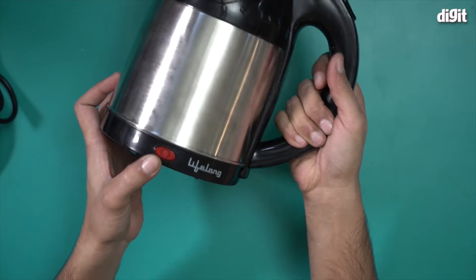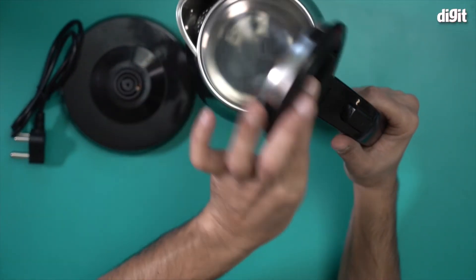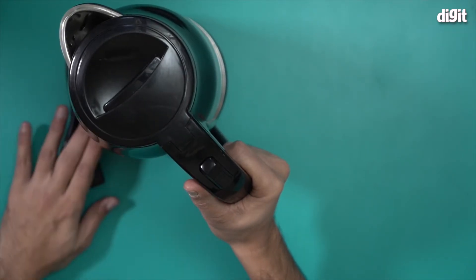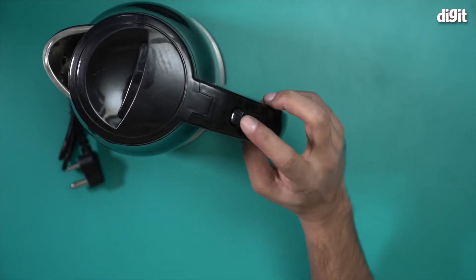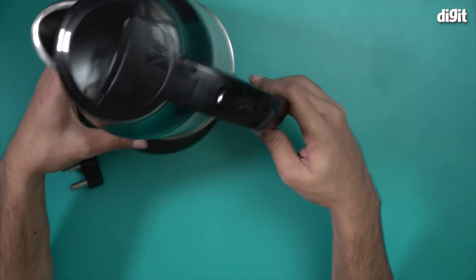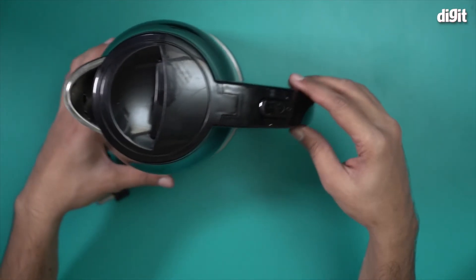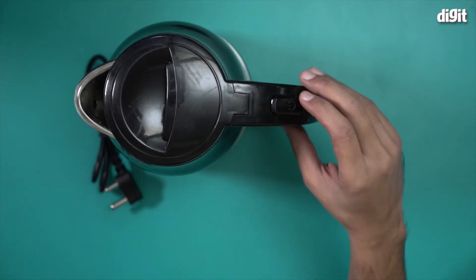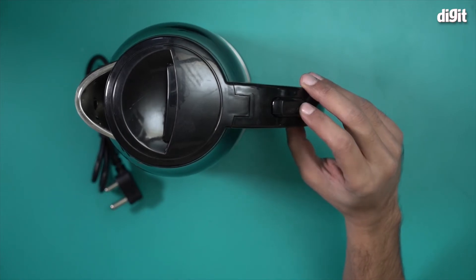There is a light over here as well. The idea is that you fill this kettle with water and put it on top of this charging base, connect it to a power source, and then switch it on. The moment you switch it on, this light will turn on, and once the water starts boiling, the light will go off and this button will switch off automatically.